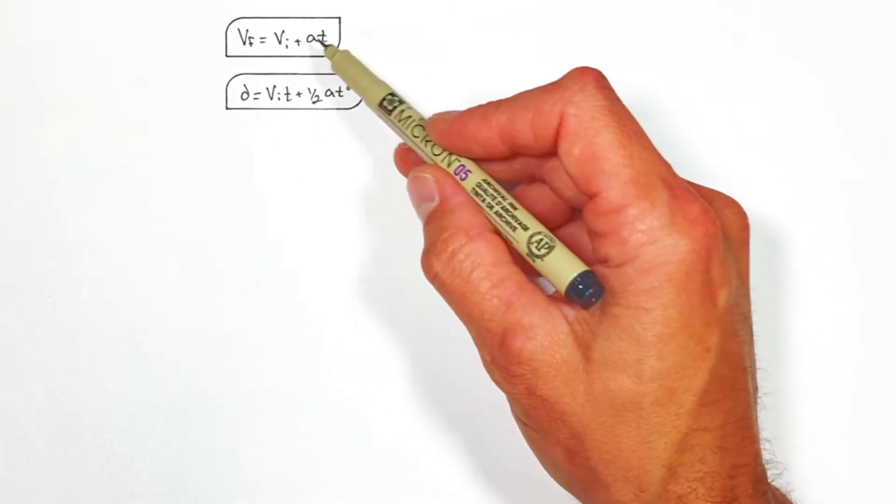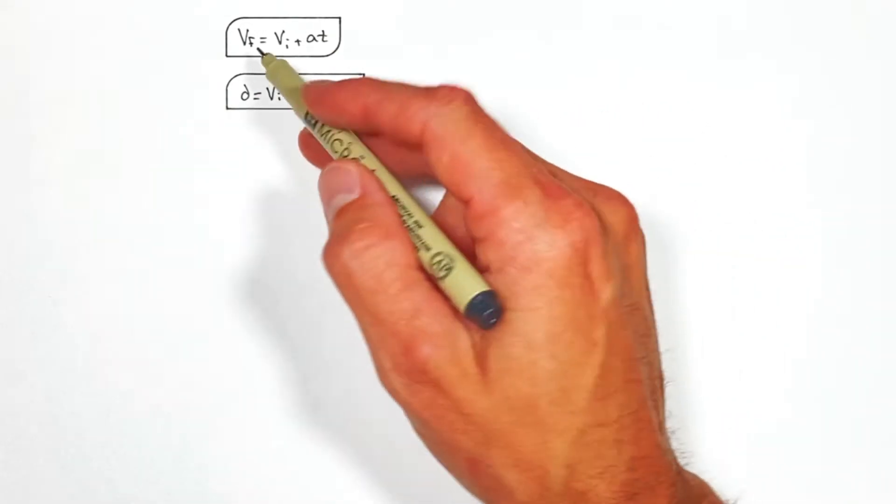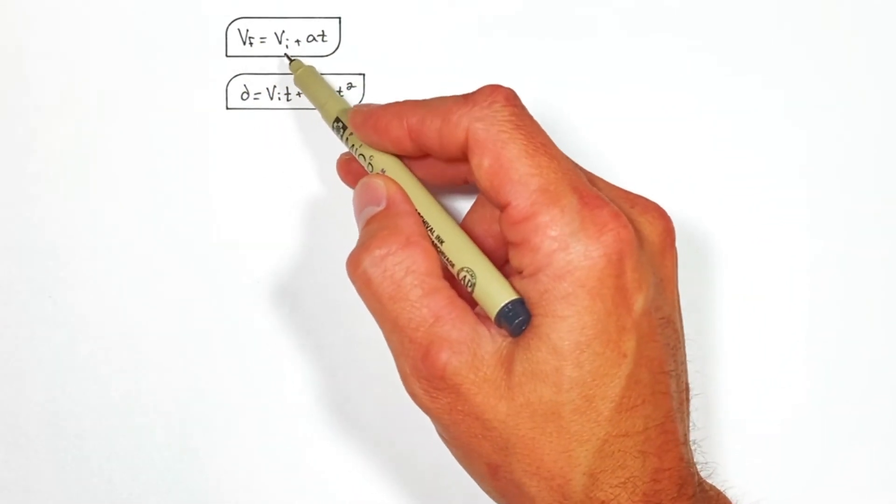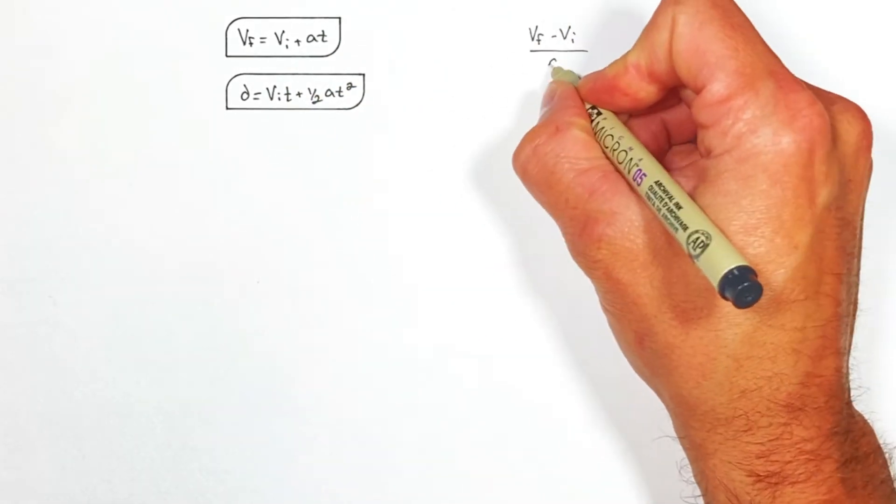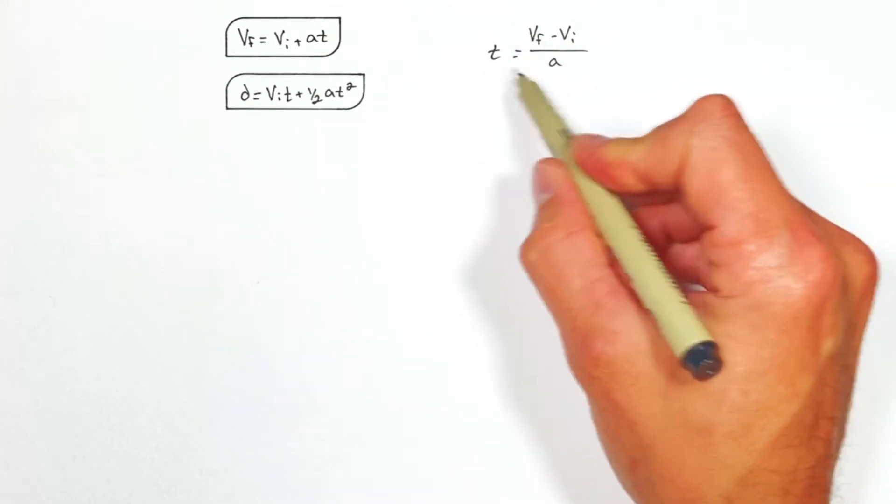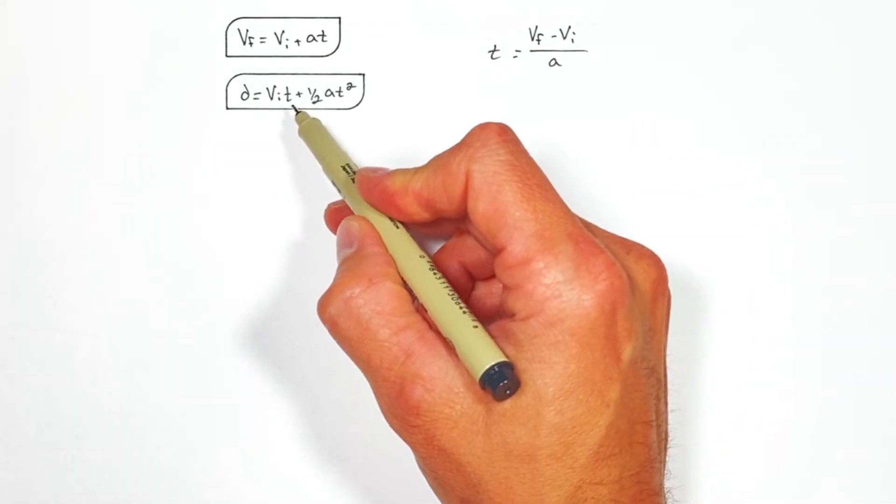You see, the third kinematic equation factors out time. So what we're going to do is take this equation right here and rearrange it for t, and we're going to take that equation and substitute it in for t right here.